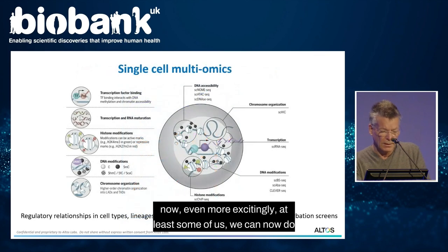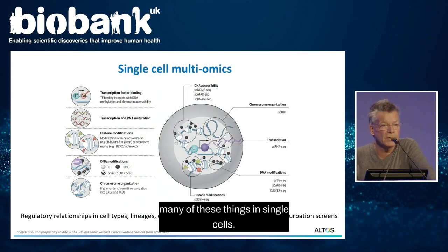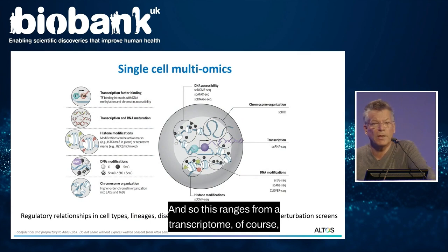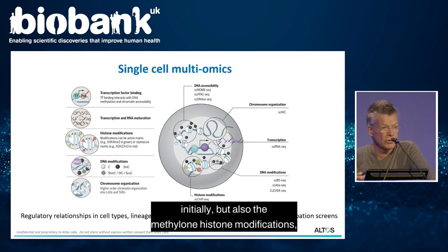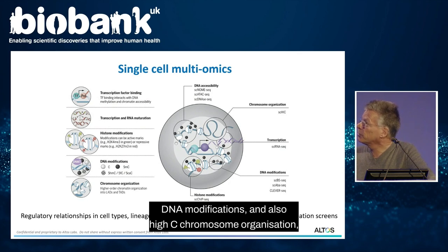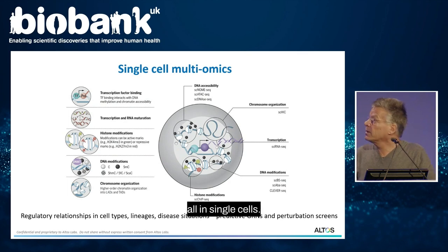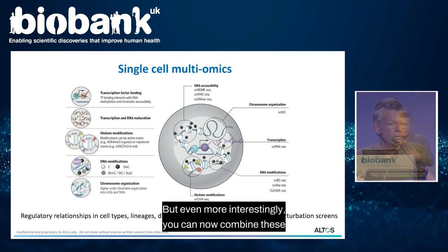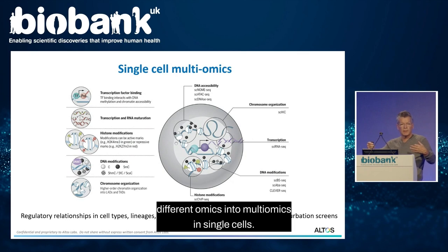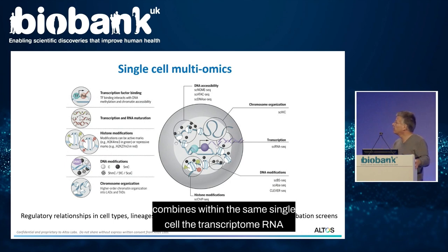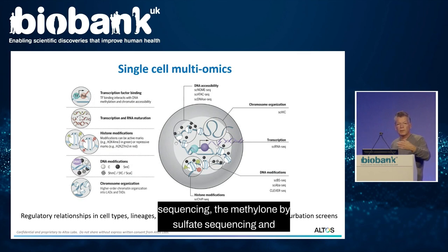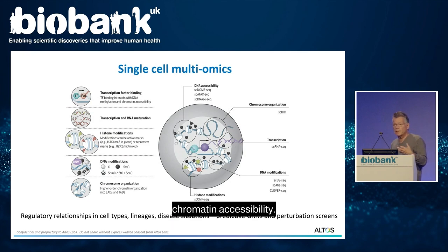Even more excitingly, we can now do many of these things in single cells. This ranges from the transcriptome initially, but also the methylome, histone modifications, DNA modifications, and also Hi-C chromosome organization — all in single cells. Even more interestingly, you can now combine these different omics into multi-omics in single cells. Our most advanced recent method combines within the same single cell the transcriptome via RNA sequencing, the methylome via bisulfite sequencing, and chromatin accessibility. This is called NMT-seq.